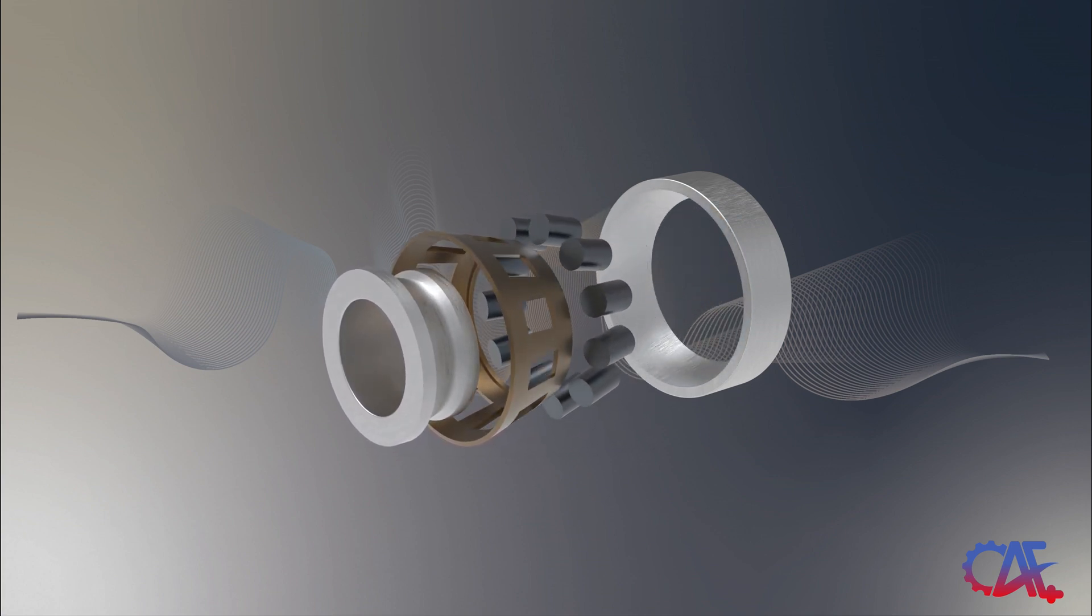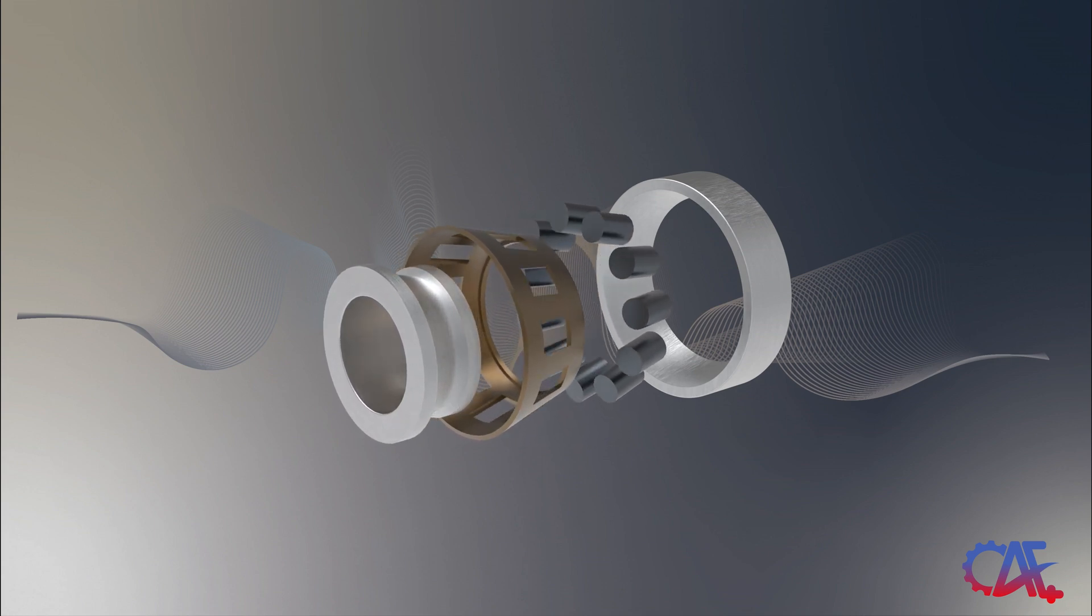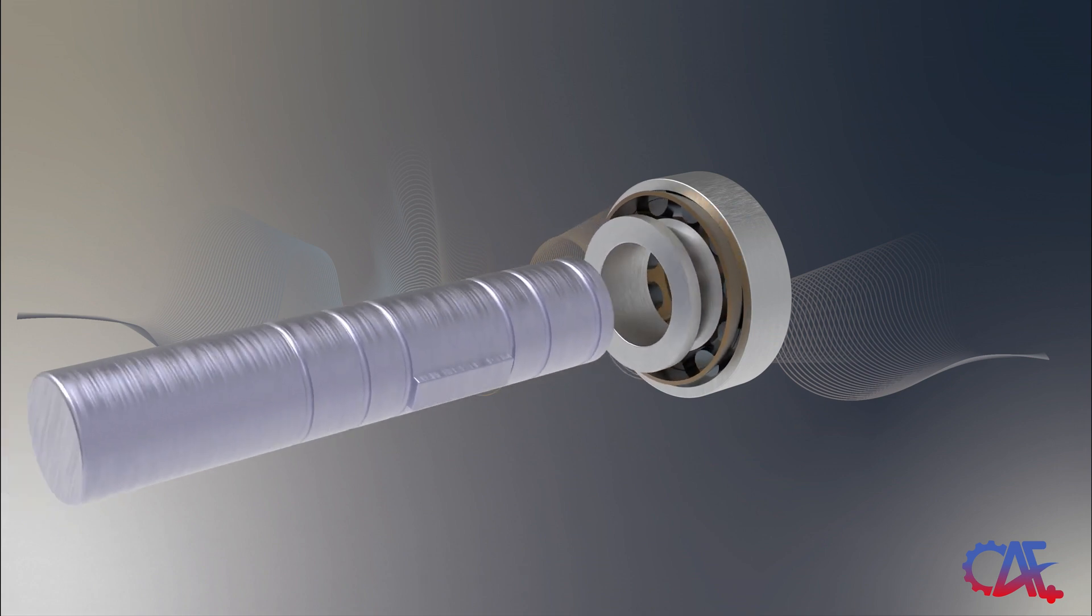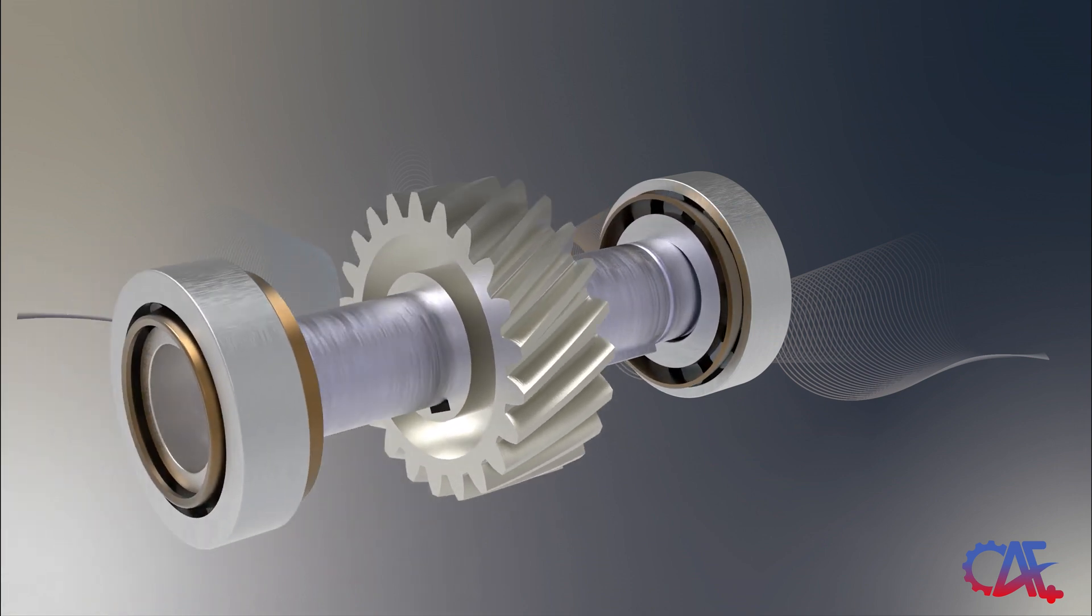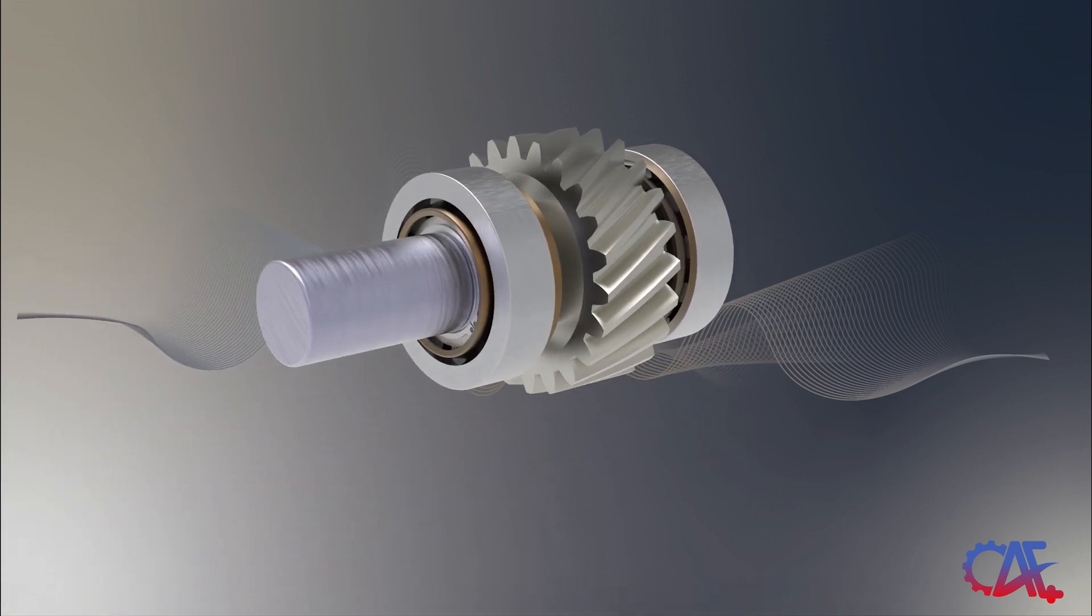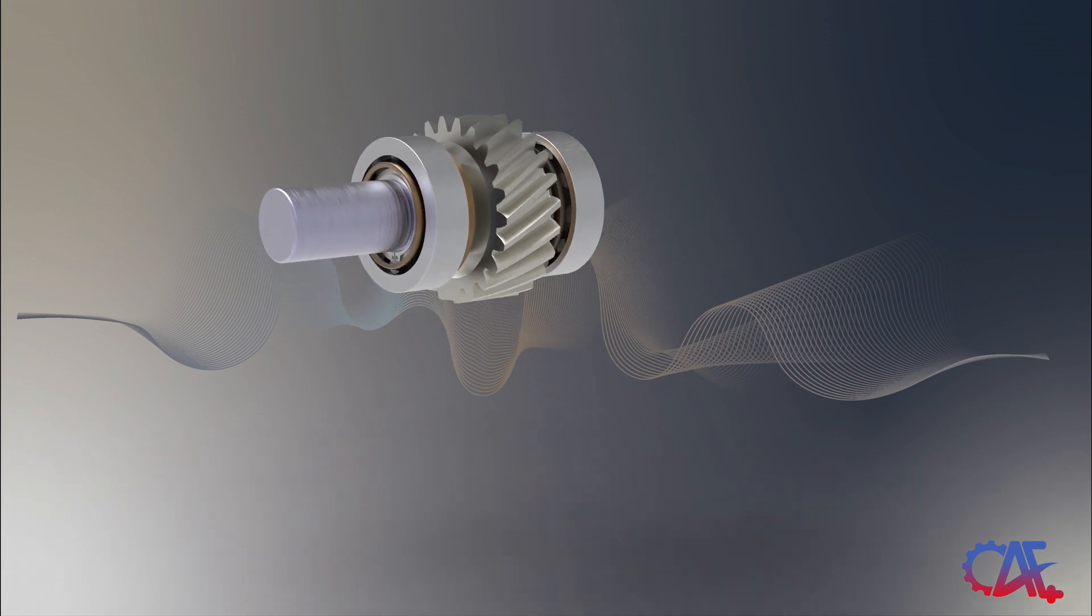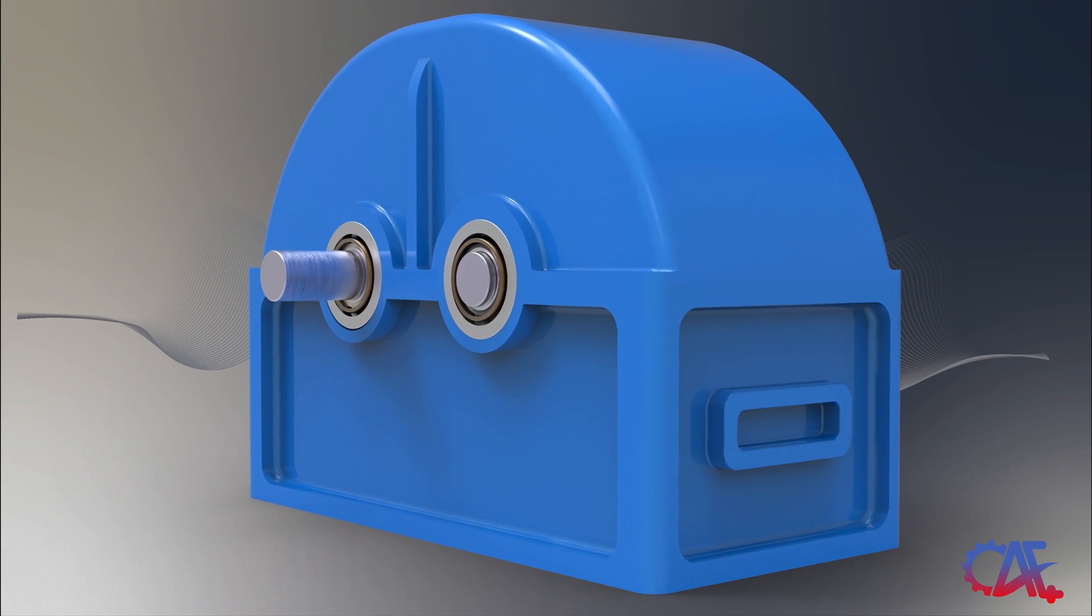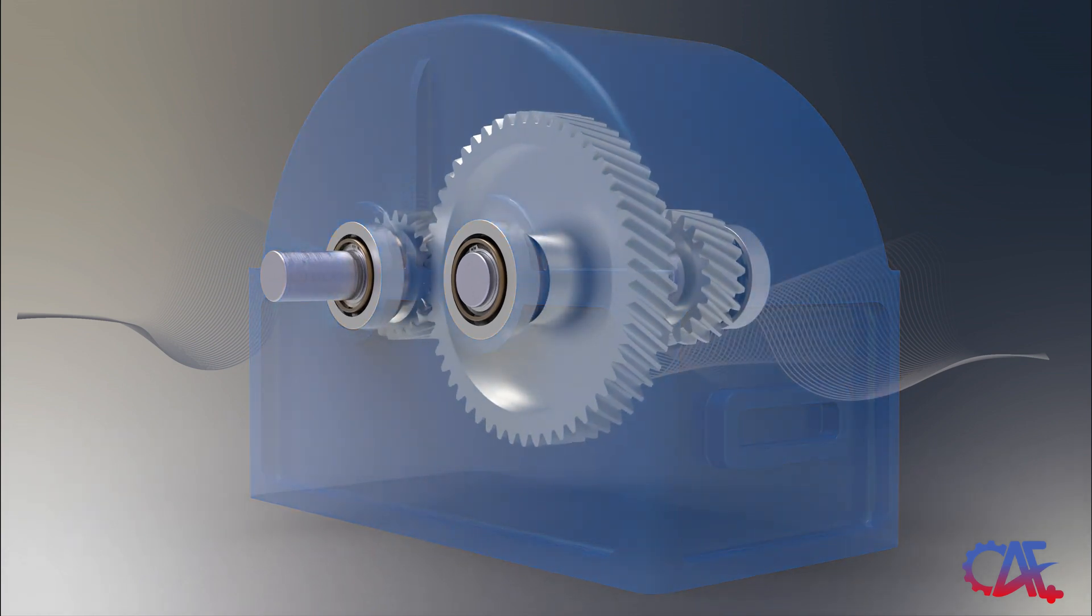Gear speed reducers are found in numerous applications, from conveyor systems and manufacturing plants, lifting mechanism in cranes, to automotive transmissions. Given the unique demands placed on gear speed reducers by the axial and radial forces generated, particularly from helical gears, these specialized bearings are vital for ensuring the smooth and efficient operation of the gear reducer.